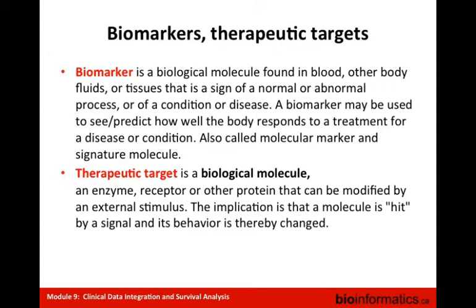Let's recall what biomarkers and therapeutic targets are. A biomarker is a biological molecule found in blood, other body fluids, or tissues that is a sign of a normal or abnormal process, condition, or disease. A biomarker may be used to predict how well the body responds to treatment — also called a molecular marker or signature molecule. A therapeutic target is a biological molecule — an enzyme, receptor, or other protein — that can be modified by an external stimulus, changing its behavior.